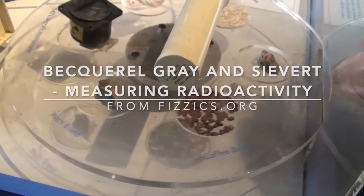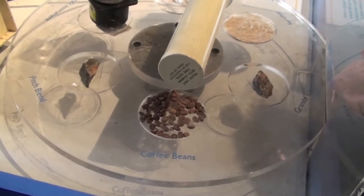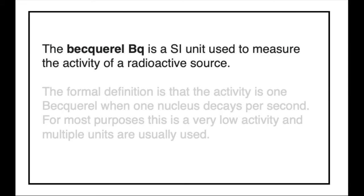Amounts of radioactivity from a small source are not easy to measure or quantify. There are three units used in this measurement. The first and easiest to understand is the Becquerel, named after the man who, jointly with Pierre and Marie Curie, won the Nobel Prize for the discovery of radioactivity.